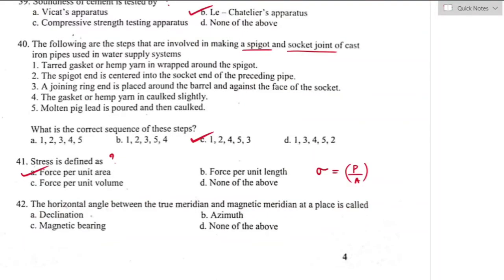Question number forty-two: the horizontal angle between the true meridian and magnetic meridian at a place is called declination. Option A is the right answer. If the magnetic north is to the east of true north, declination is positive; if to the west, it is negative.